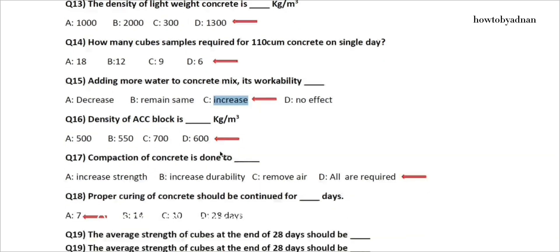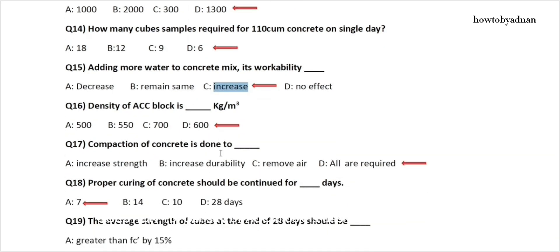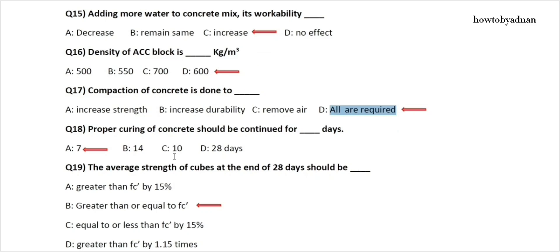Question 16: The density of AAC block is how many kg per cubic meter? The answer is option D: 600. Question 17: Compaction of concrete is done to? The answer is option D: All are required. Question 18: Proper curing of concrete should be continued for how many days? The answer is option A: 7.